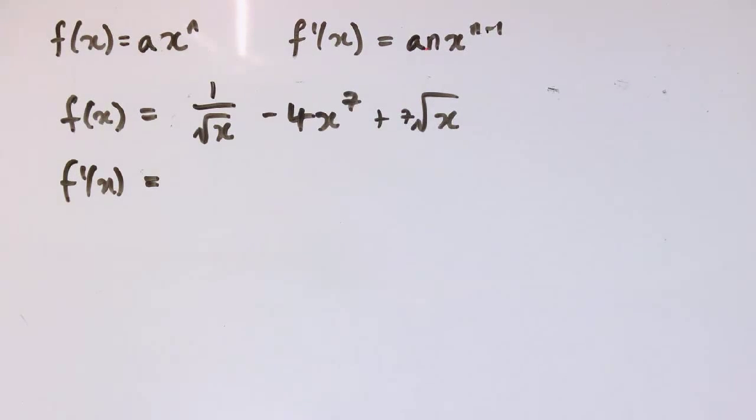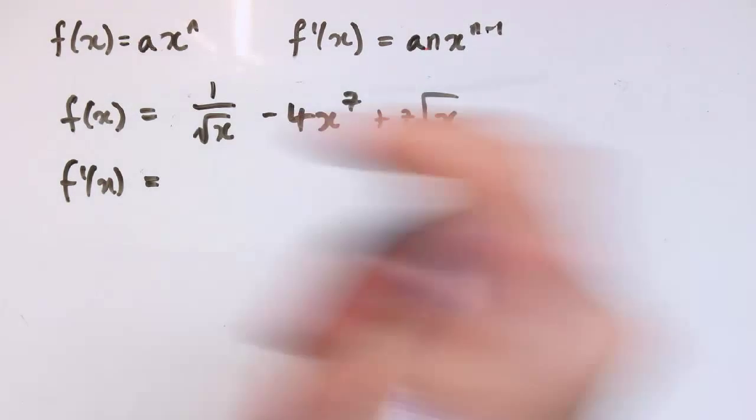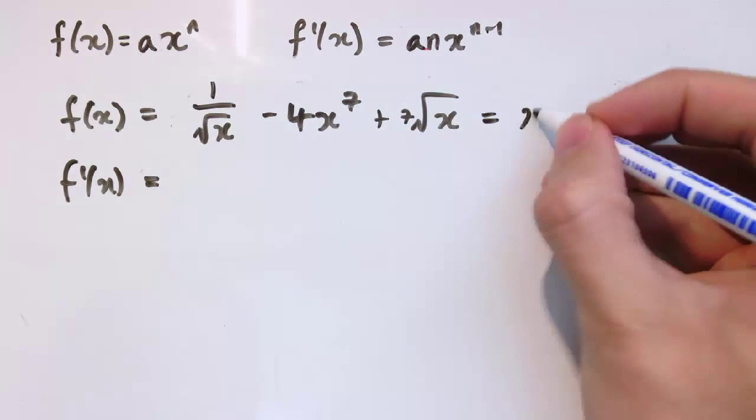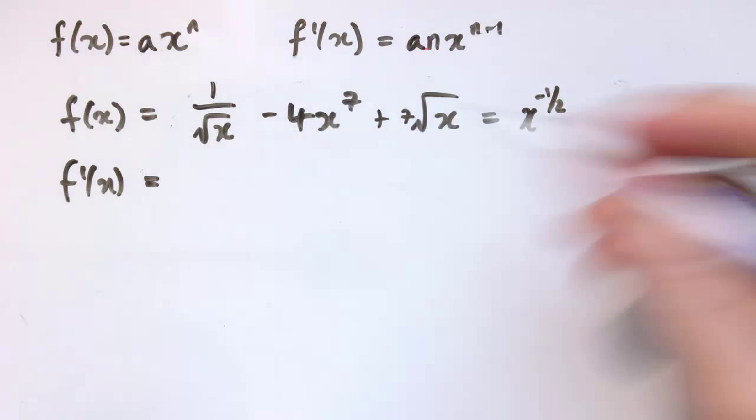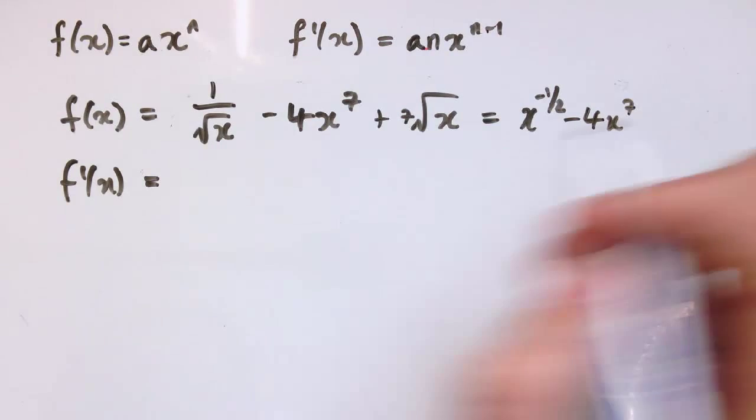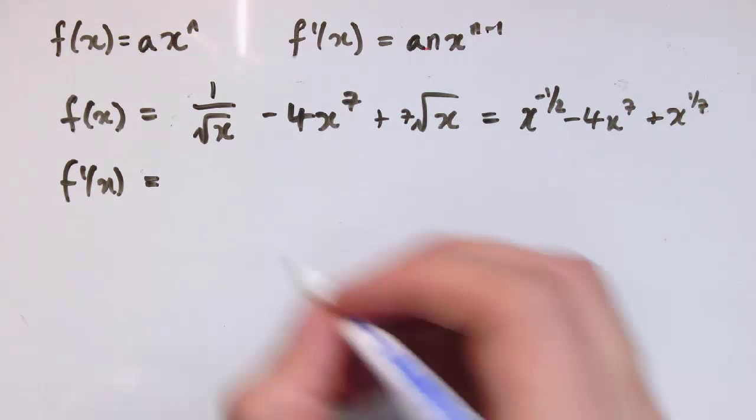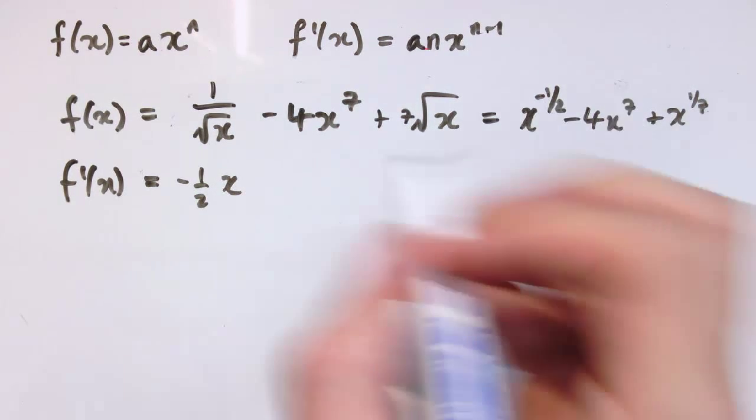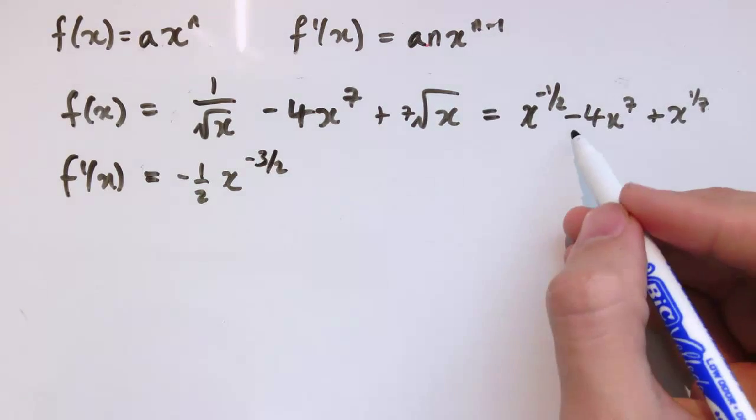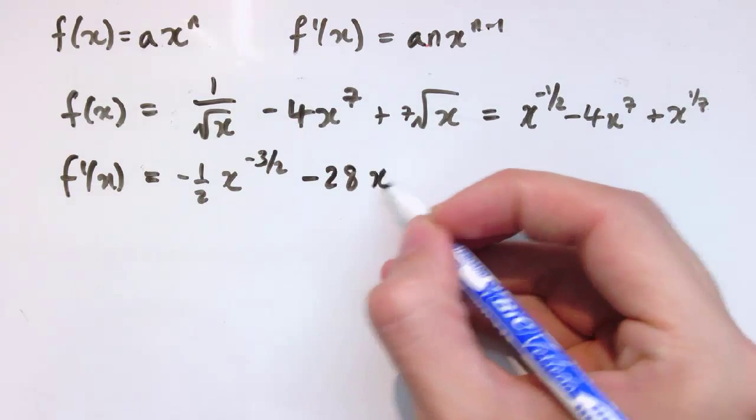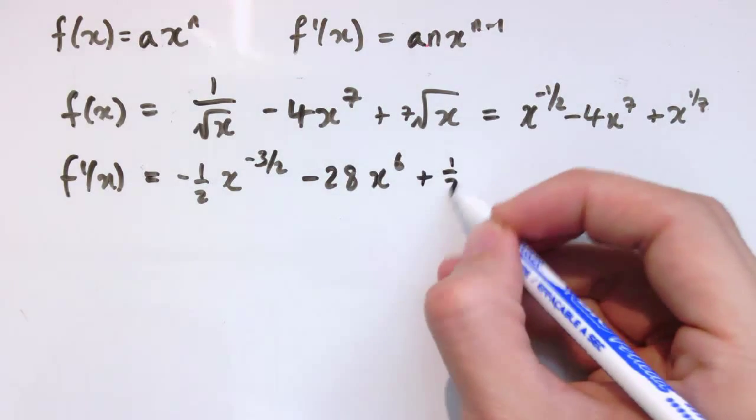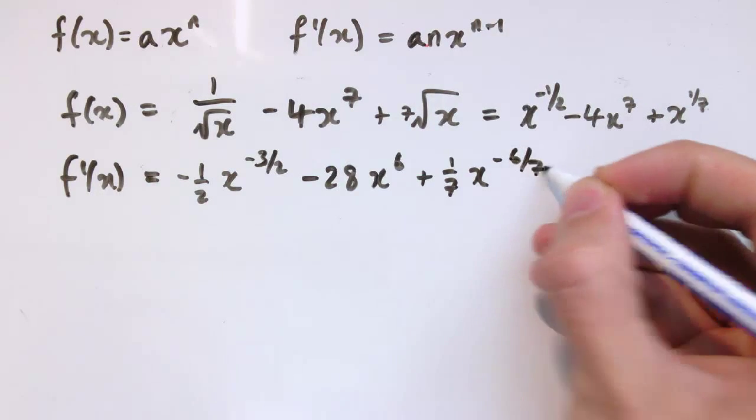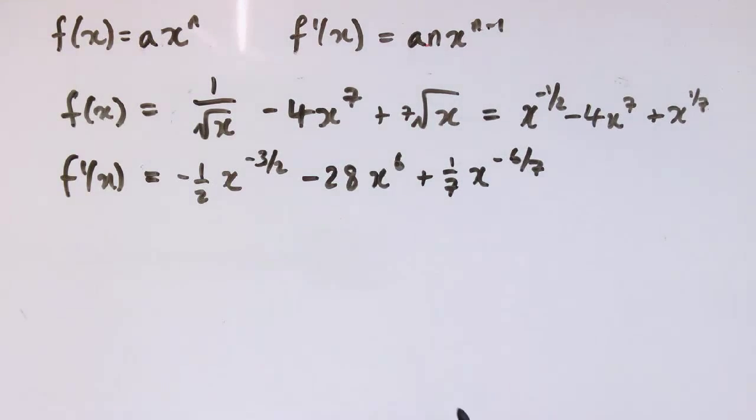Once you get the hang of these, they all proceed in the same sort of way, so first step, convert it into the index form, so 1 over root x is x to the minus 1 half minus 4x to the 7, that's already in a form we can differentiate, and the 7th root of x, that's x to the 1 7th, so differentiating it, so x to the minus 1 half, I get minus 1 half x to the, now reduce this by 1, gives us minus 3 over 2, 4 times 7 is 28, so that's minus 28 x to the 6, and plus 1 7th x to the minus 6 7th, just subtracting 1 from 1 7th to give 6 7th. Again, if you wanted to, we could try and put this back into a form with some square roots in it, but I'm not going to do that here.